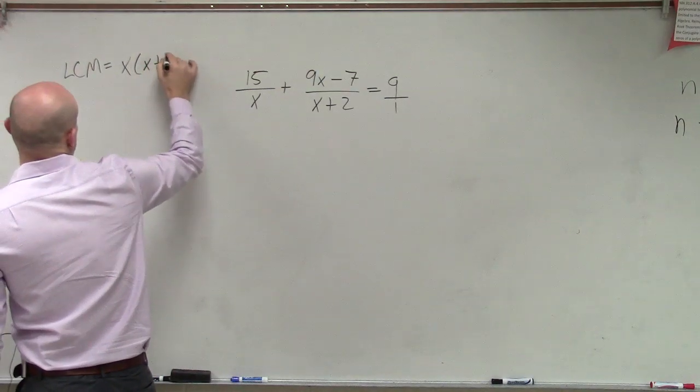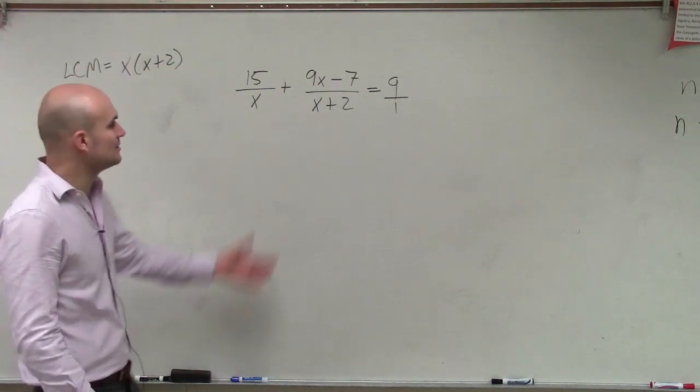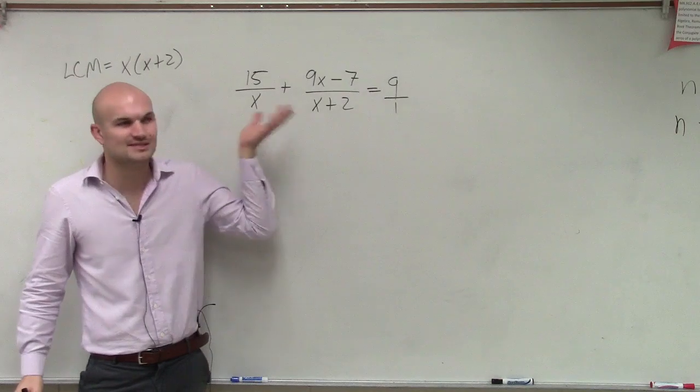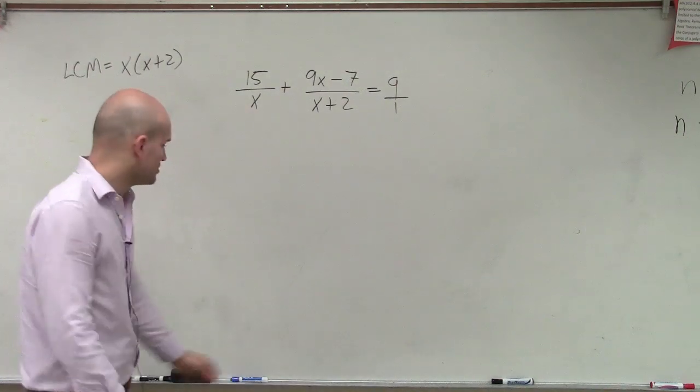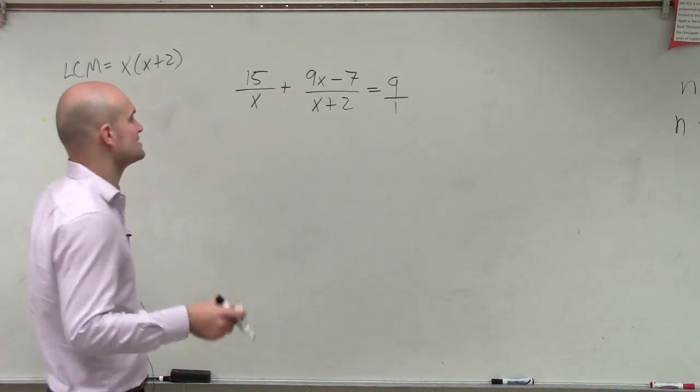And the reason why it's going to be x times x plus 2 is, again, you always want to try to see if you can factor them, but these we can't factor any further, so that's just going to leave it as is. So now what we're going to want to do is multiply every single term by x times x plus 2.